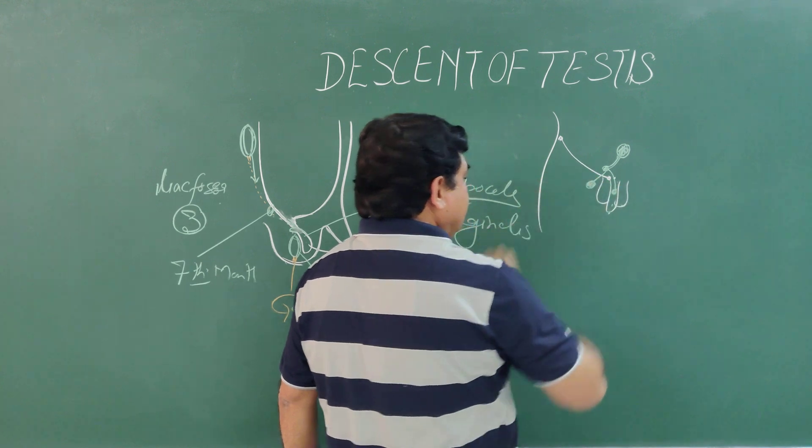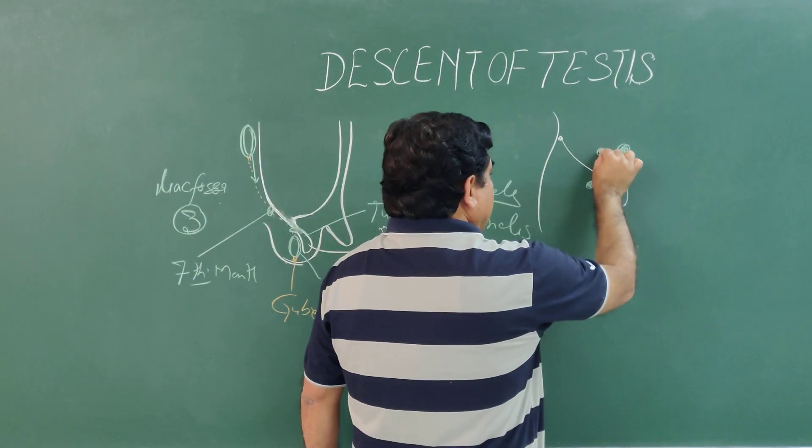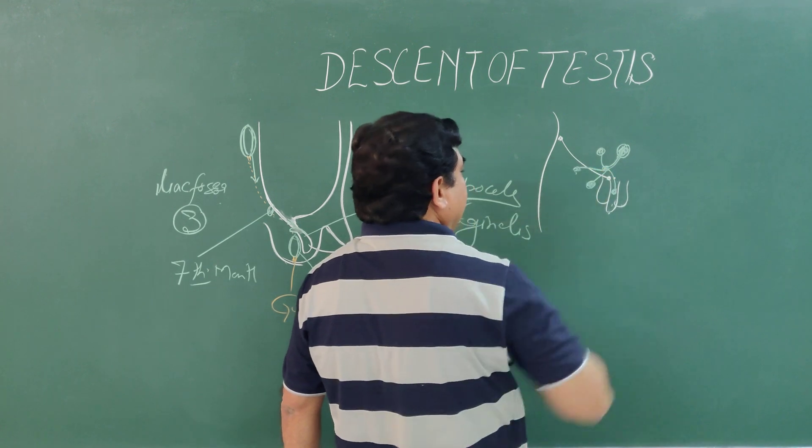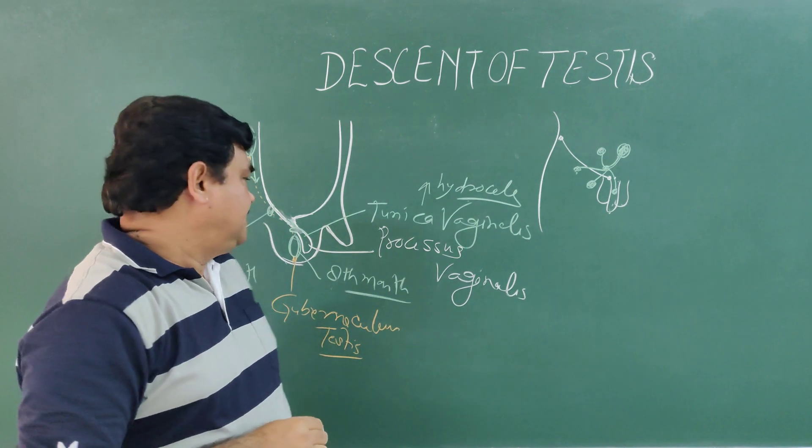Here, it may be in the femoral triangle. So it may lie here, anywhere. So these are ectopic positions of the testis.